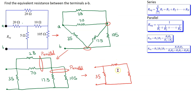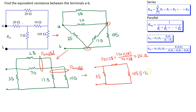This value is given by 70 parallel with 28. Using shorthand notation, 70 parallel 28 is given by 70 times 28 over 70 plus 28, which equals 20 ohms. And similarly, this resistor has a value of 105 parallel 17.5, which is given by 105 times 17.5 divided by 105 plus 17.5, equaling 15 ohms.